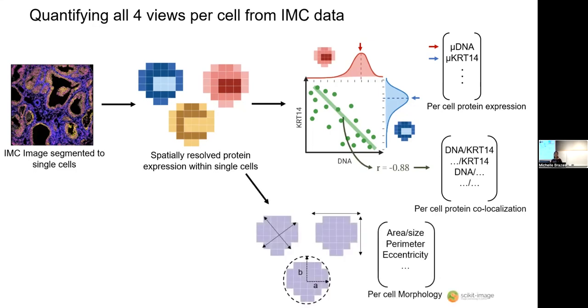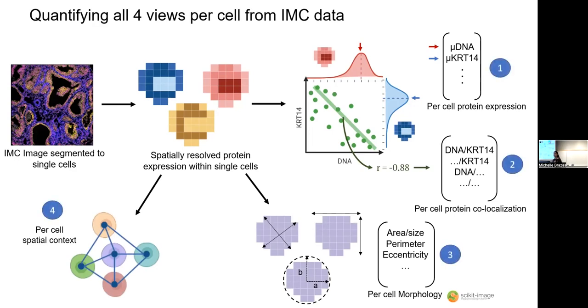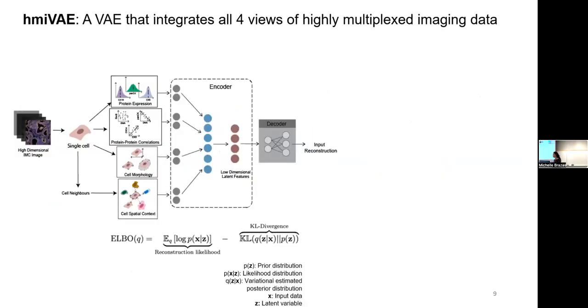I can use standard image processing libraries such as scikit-image from Python to get their morphology features like area, size, perimeter, eccentricity, things like that. And then I can also identify a cell's nearest neighbors and repeat the analysis for them to get a cell's spatial context. So these four views form the inputs to my model, which I'm calling highly multiplexed imaging variational autoencoder, or hmiVAE.